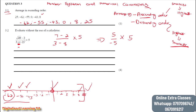We can then solve it: 5 divided by negative 5 gives us negative 1. Negative 1 multiplied by 5 gives us negative 5. So our final answer will be negative 5. If you are struggling to understand it, you can just pause the video and rewind so that you can understand the entire concept.